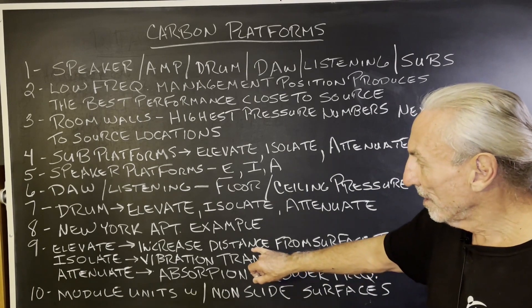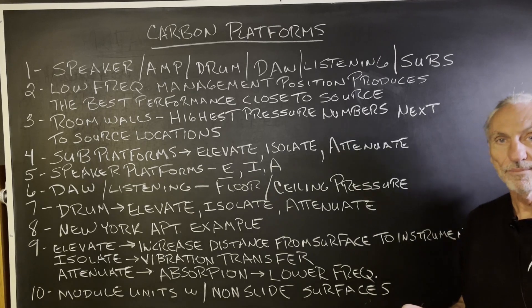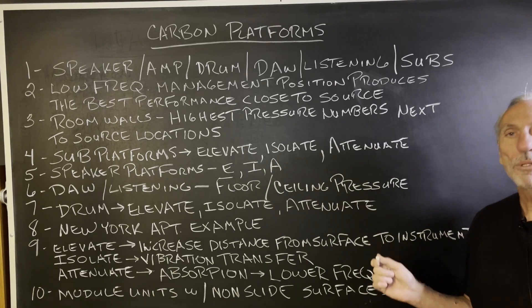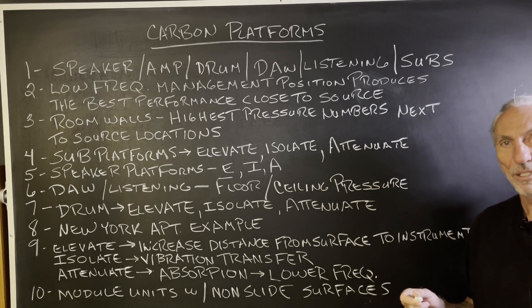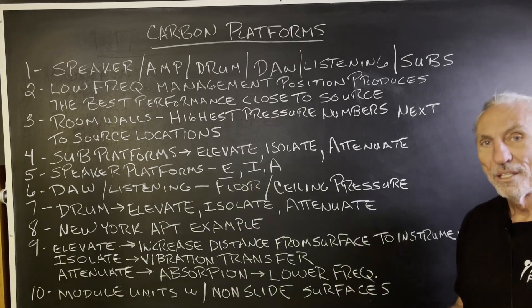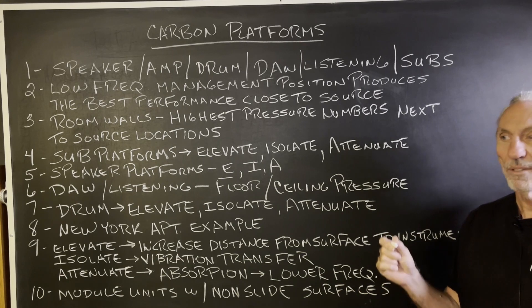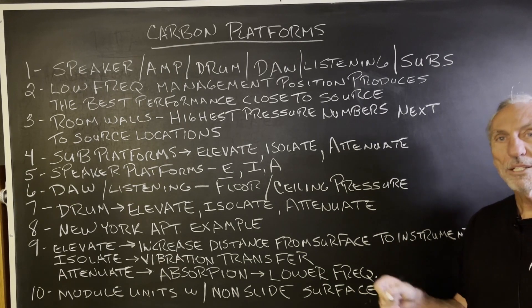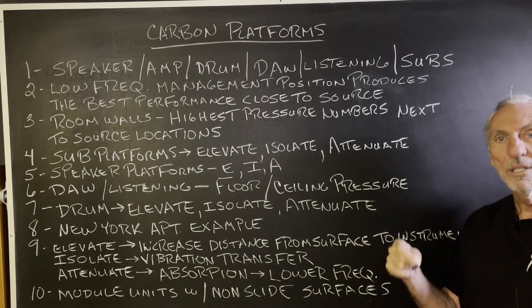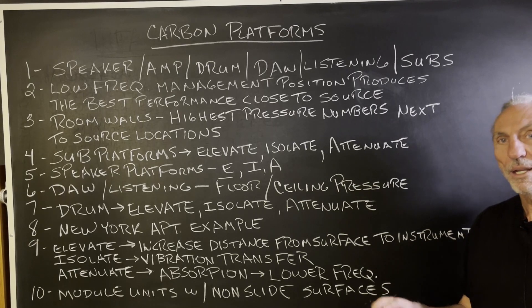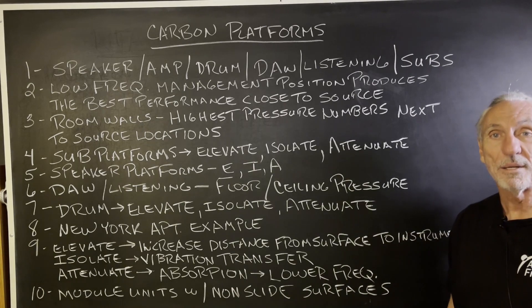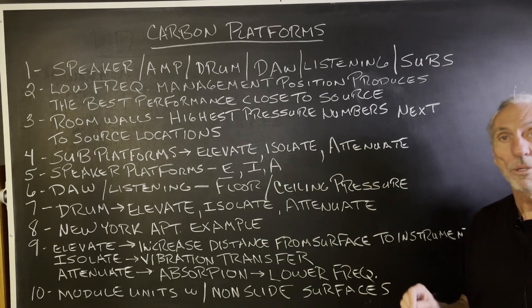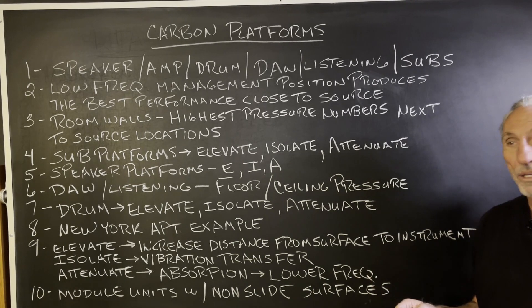Elevate — increase the distance from the surface to the instrument. Always a good idea. Just like you don't put your speakers against walls or subwoofers in the corners of the room — keep them away from those boundary surfaces. We're trying to increase resolution, not increase distortion. Isolation: speakers, subwoofers, all kinds of things produce sound through vibration. When it transmits from the source to the floor, you get the floor moving and turning it into a diaphragmatic situation which produces energy. Attenuate — absorption is the main objective. You won't find a product that absorbs at a higher rate and level than our carbon. There are none on the marketplace. If you see one that has better data than ours, send it to me.